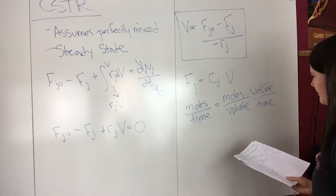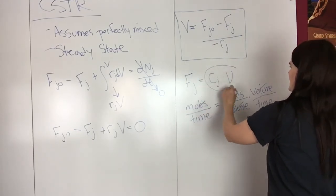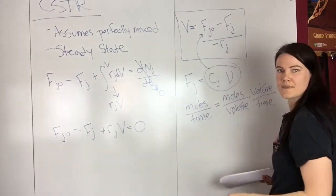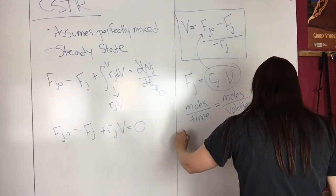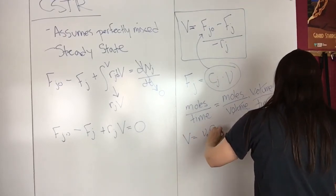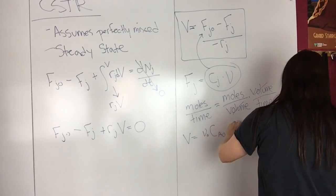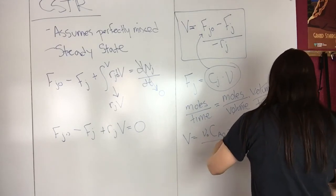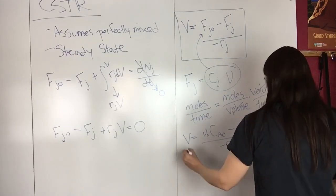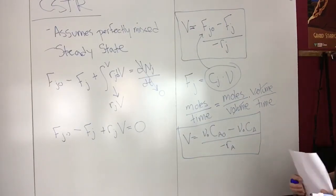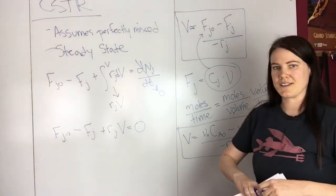Then you can plug this in. You get volume equals V0·CA0 minus V·CA over negative RA. This is also the mole balance for CSTR.